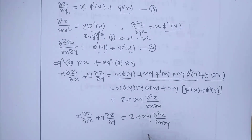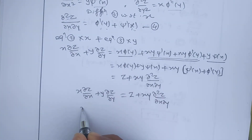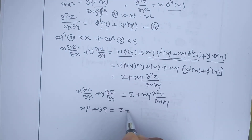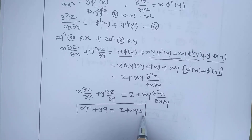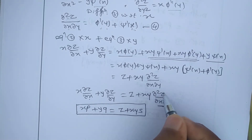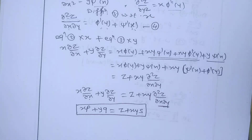So we get the differential equation: x·(∂z/∂x) + y·(∂z/∂y) = z + xy·(∂²z/∂x∂y). This equation contains no arbitrary constants or functions, so it is our required PDE. We can also write this as x·p + y·q = z + xy·s. This is a second-order differential equation since the highest derivative is of order two. In the next video we will find the actual solution of PDEs using different methods. Thank you for watching.